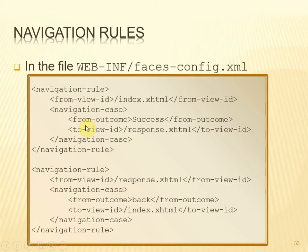Each outcome would be listed as a separate navigation case within the navigation rule, potentially giving us different destinations from the index view depending on the outcome. In the second rule, to navigate from response.xhtml with an outcome of 'back' takes us back to index.